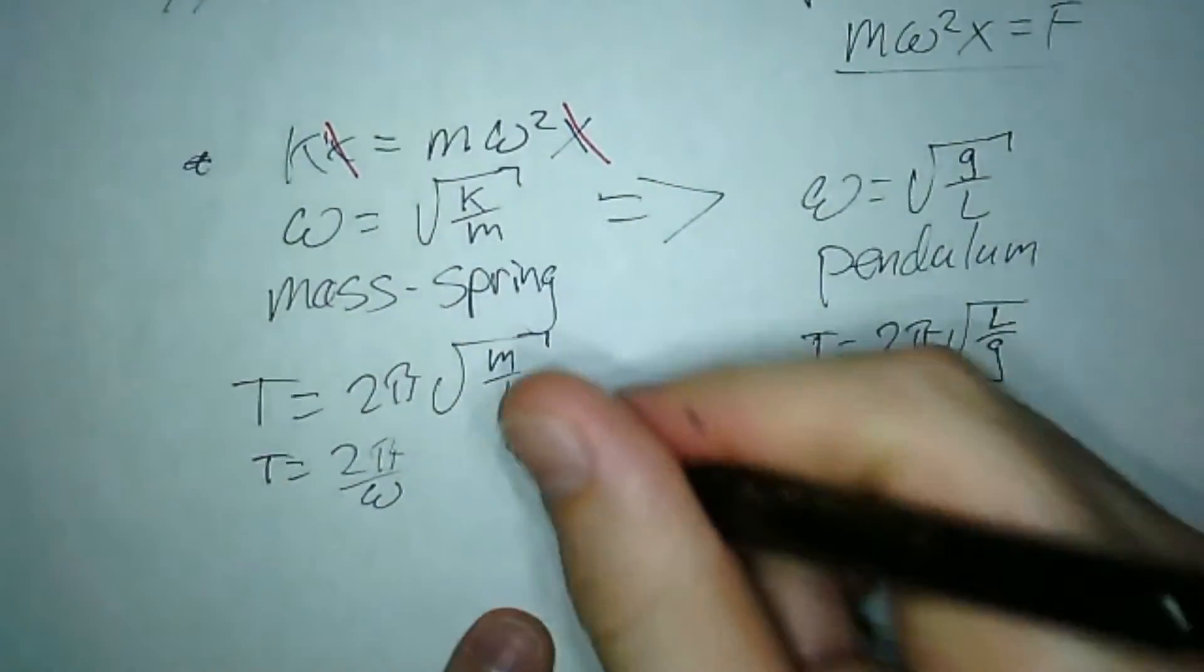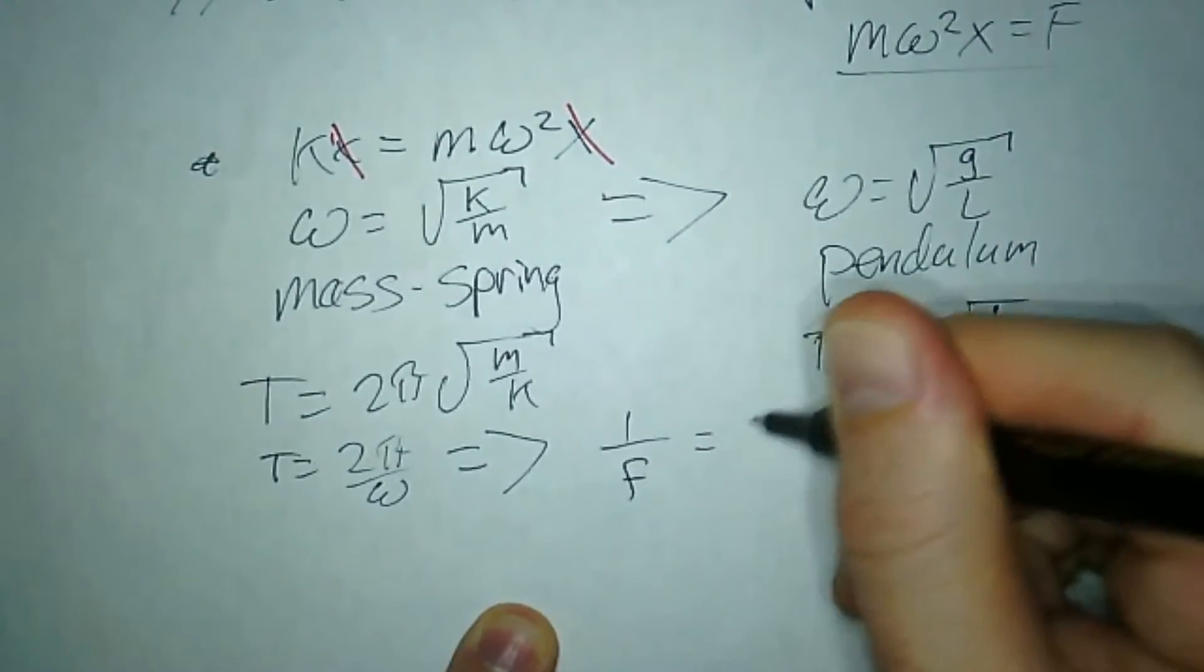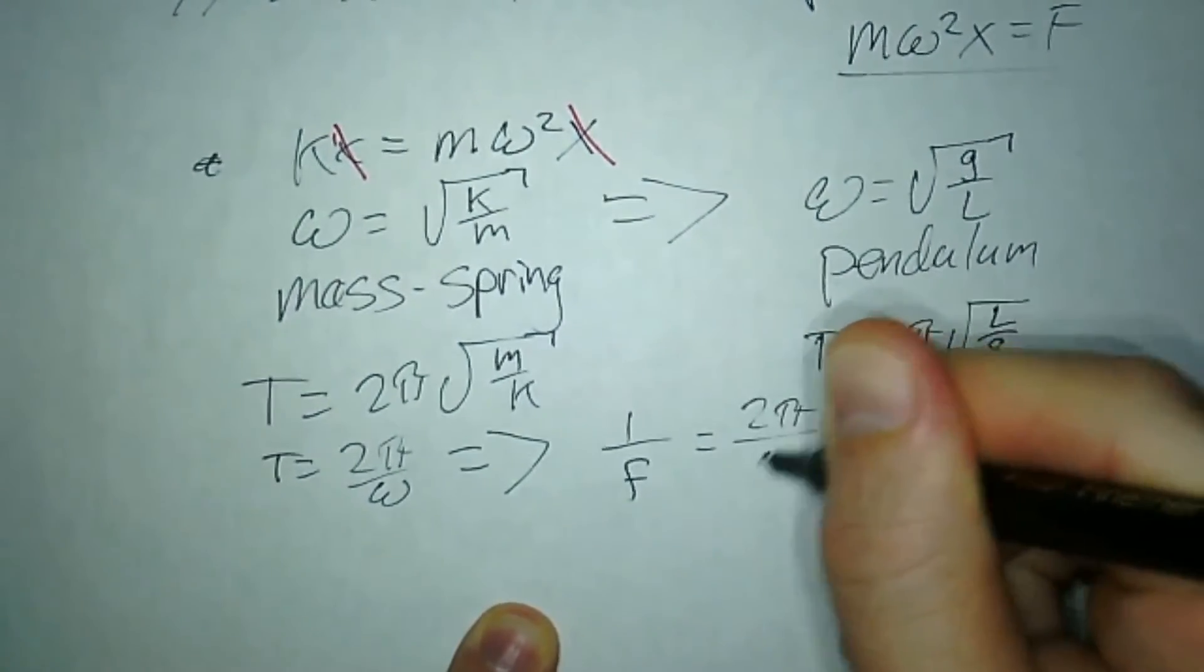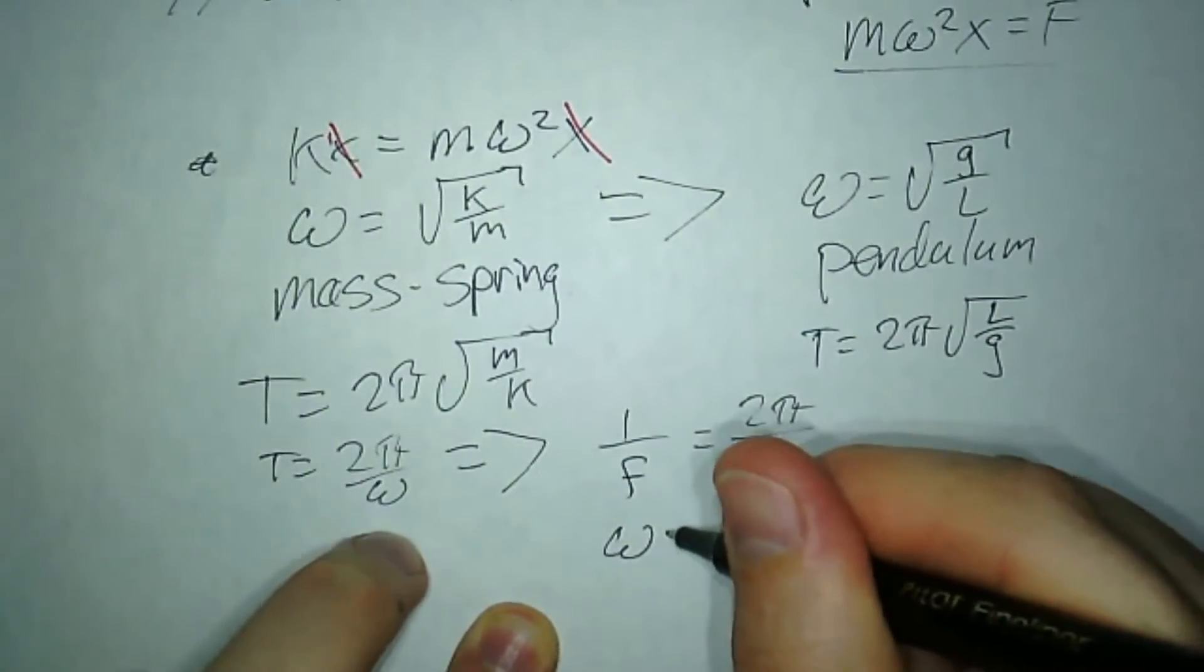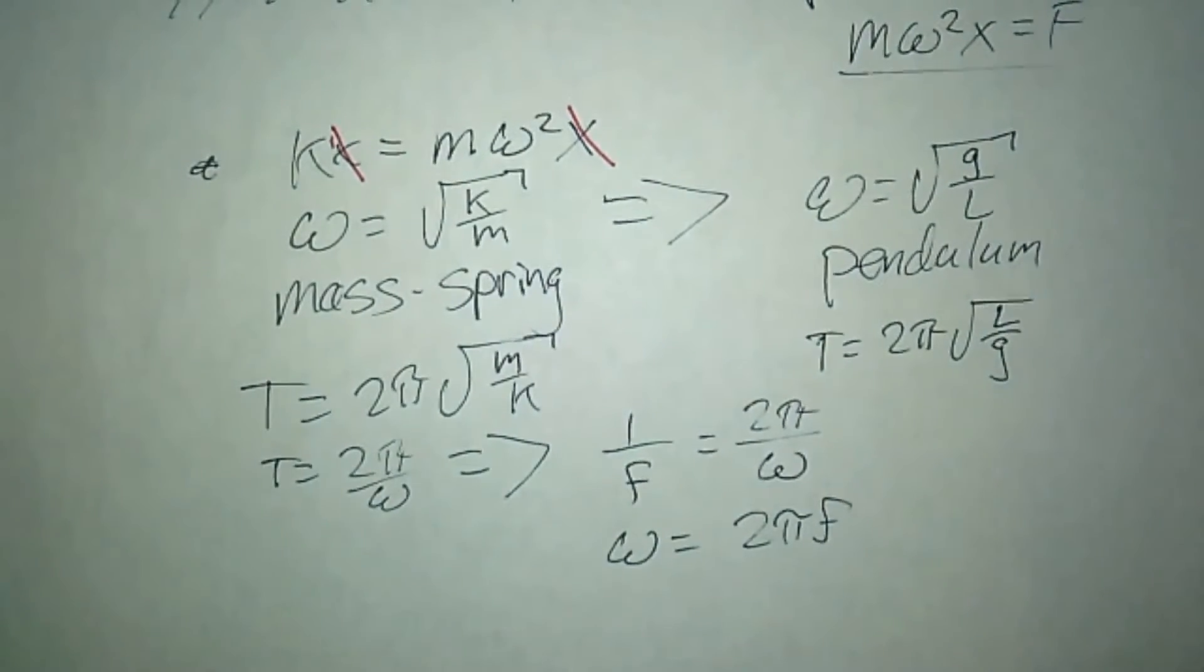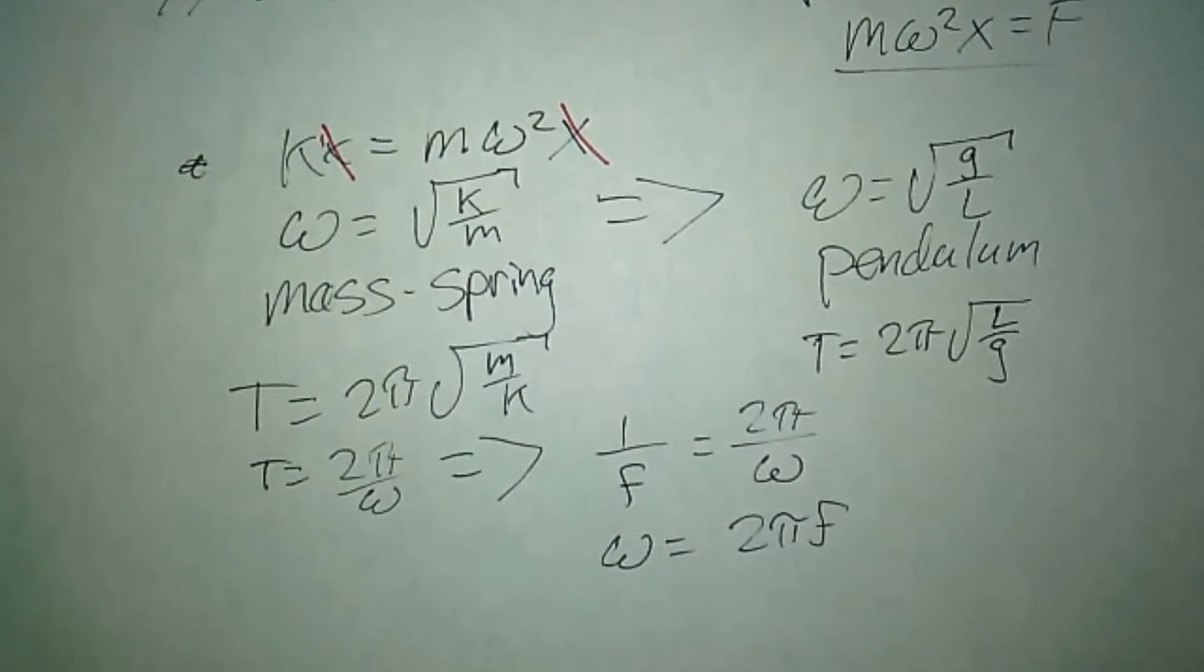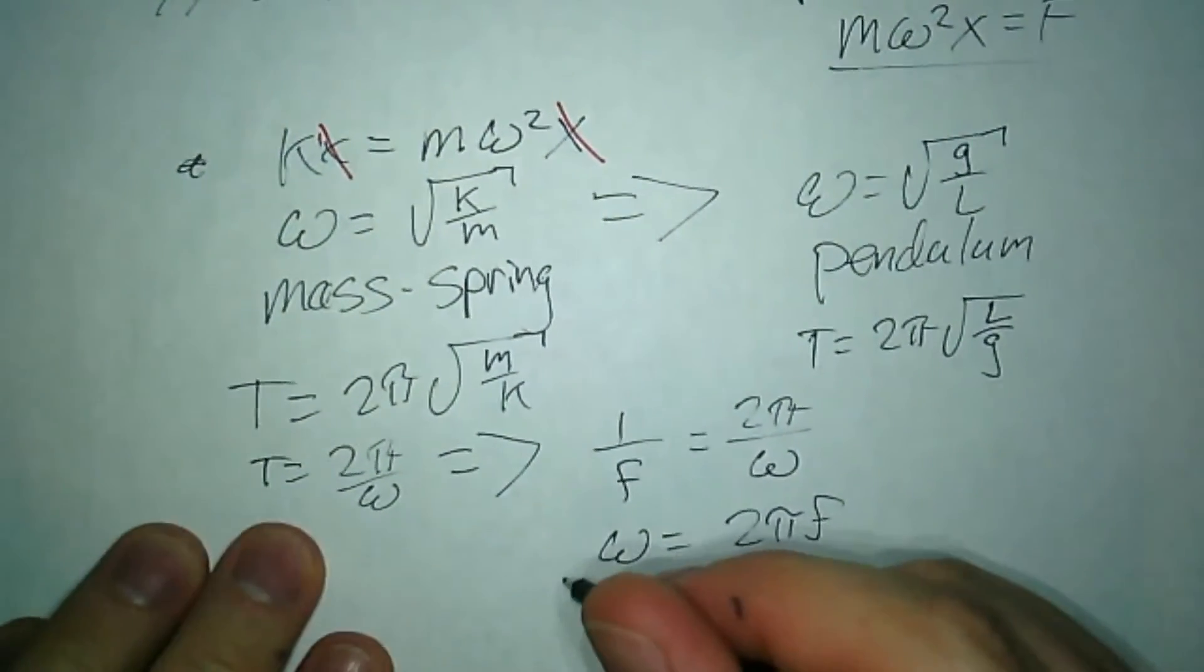If I replace this with frequency, since T = 1/f, that tells me ω = 2πf, which is probably an equation we learned before. This is just saying that angular frequency equals 2π times regular frequency.